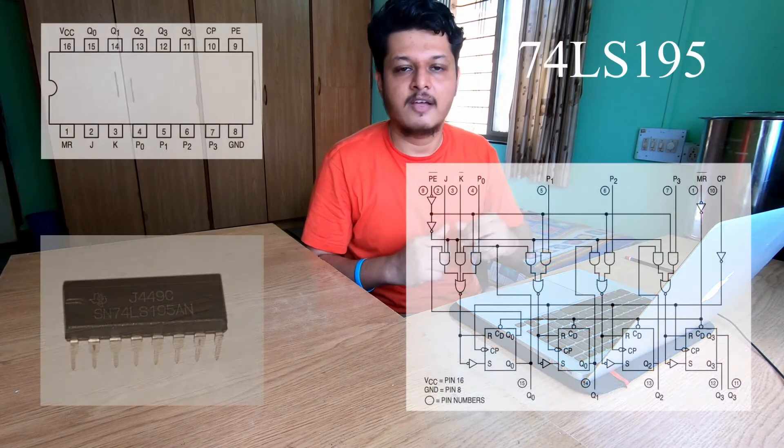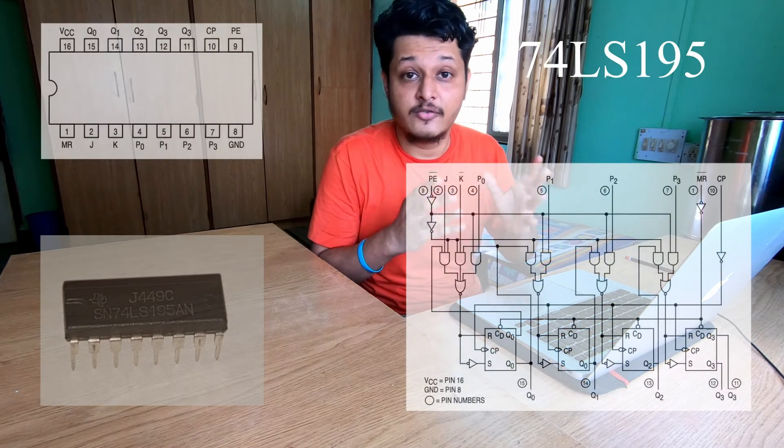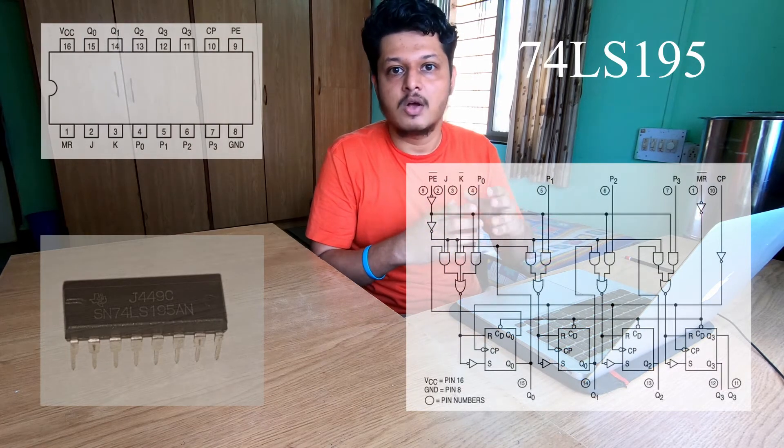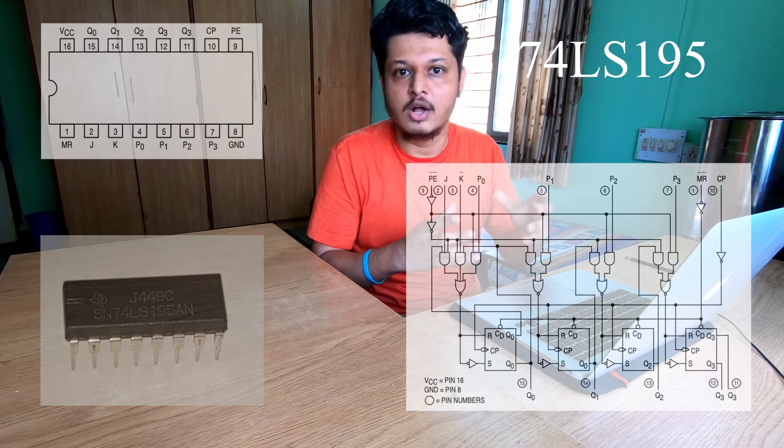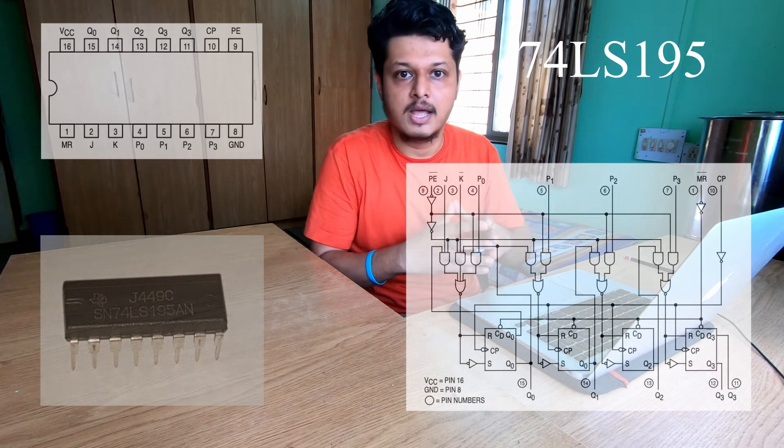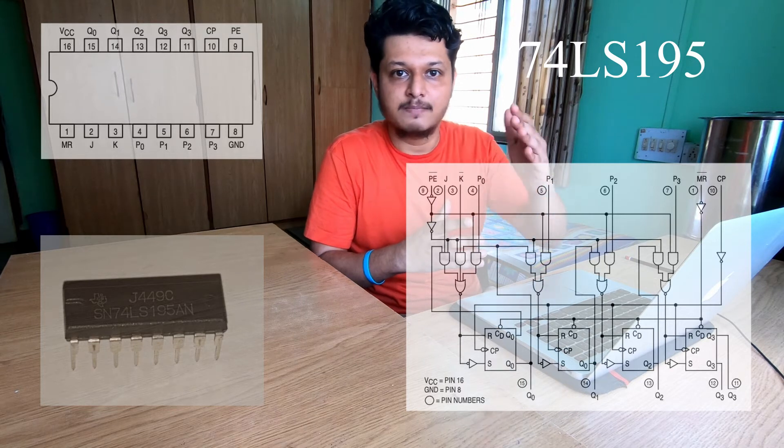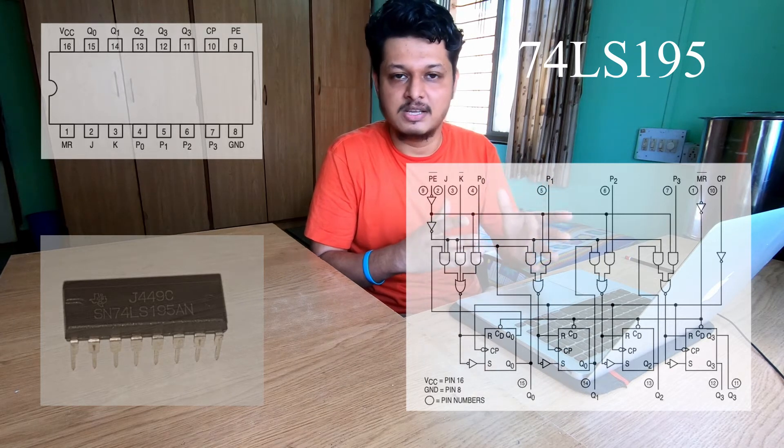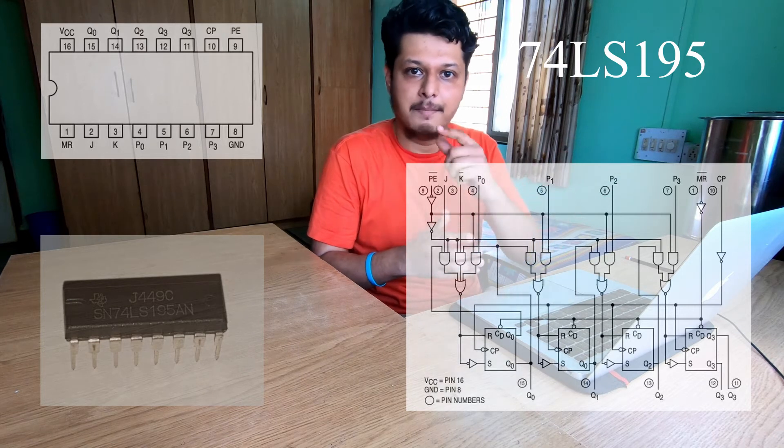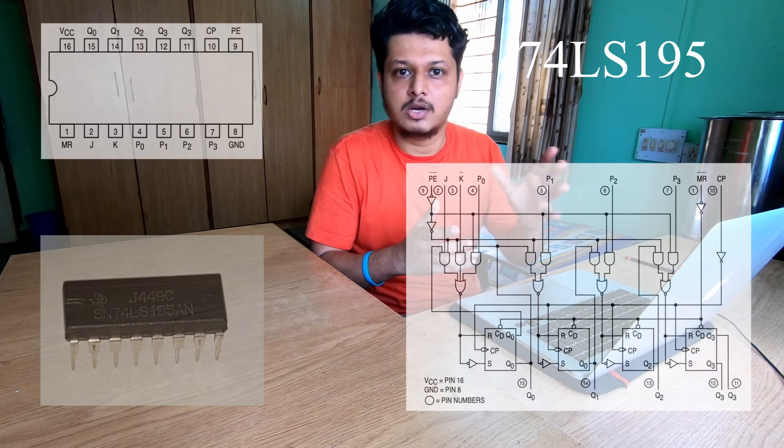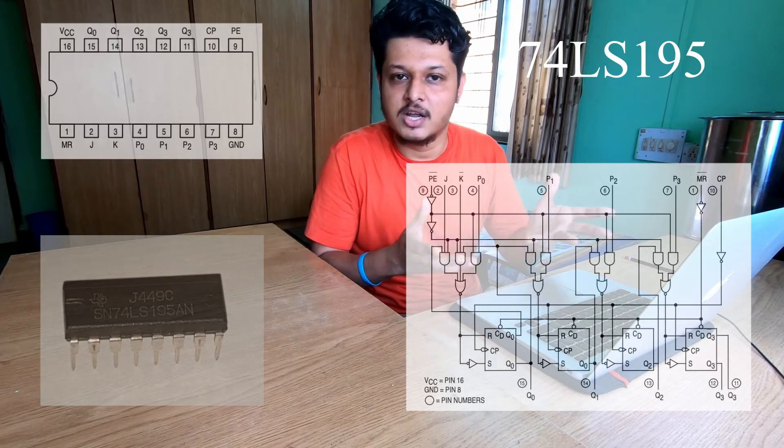For shift register we can use IC 74195. It's a universal 4-bit shift register IC which has 4 bit positions q0, q1, q2 and q3 corresponding to 4 flip-flops. We can use serial in as well as parallel in, but in this circuit I will be using serial in at JK input. At pin number 10 we are providing external clock at which we have to run our circuit.